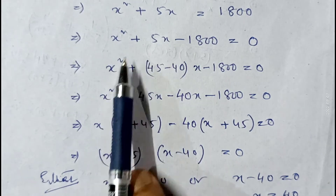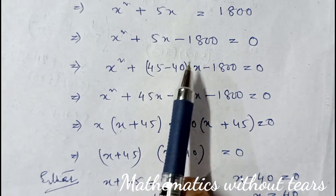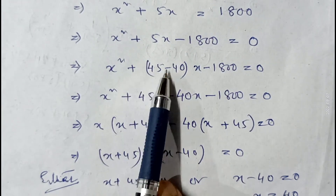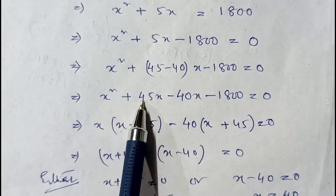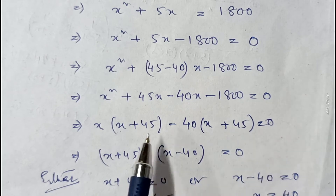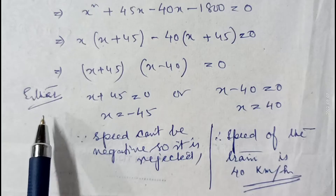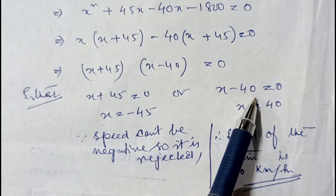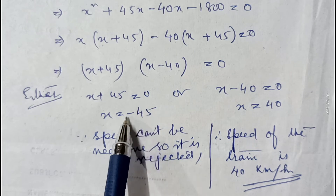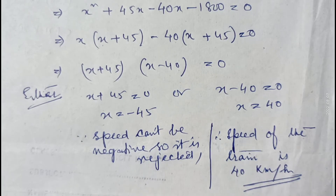Applying middle term factorization — we write 5 as 45 minus 40, since 45 × 40 = 1800 — so x² plus 45x minus 40x minus 1800 = 0. Factorizing: x(x plus 45) minus 40(x plus 45) = 0, giving (x plus 45)(x minus 40) = 0. So x = minus 45 or x = 40. Speed cannot be negative, so x = minus 45 is rejected. Therefore the speed of the train is 40 kilometer per hour.